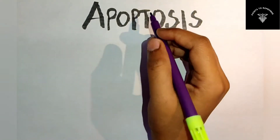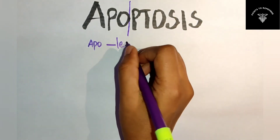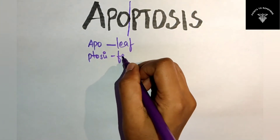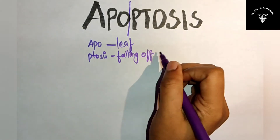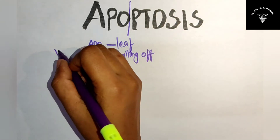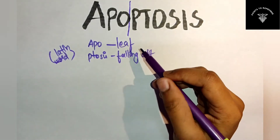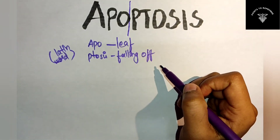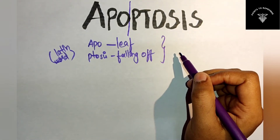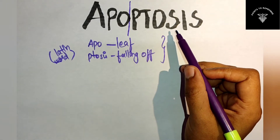From this term you can derive the meaning. 'Apo' means leave and 'tosis' means falling off — it is derived from the Latin word. It means that the dead leaves fall off from the tree when they are dead. In the same way, they have derived the word apoptosis.